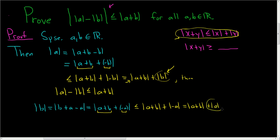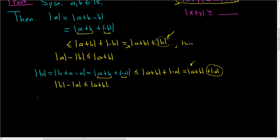Subtracting the absolute value of a from both sides, we end up with the absolute value of b minus the absolute value of a, less than or equal to the absolute value of a plus b. Now if the result is not obvious, let's go ahead and rigorously justify the final step.